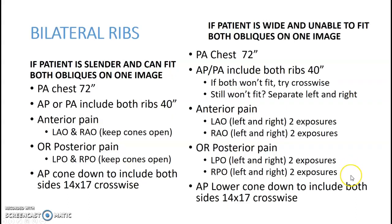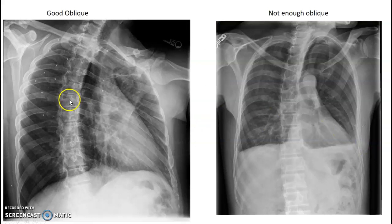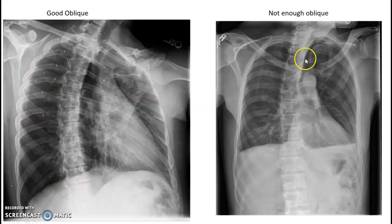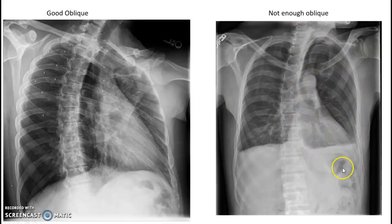For bilateral ribs, ideally the patient is small enough to fit both obliques on one image. If not, you'll have to do separate obliques for left and right — that's a lot of exposures. Here's an example of a good oblique: one side fully elongated, the opposite rib area foreshortened. If the oblique isn't enough, the ribs won't be elongating very much.